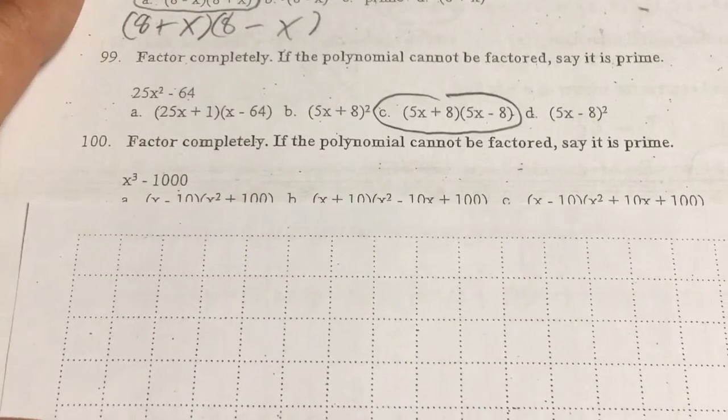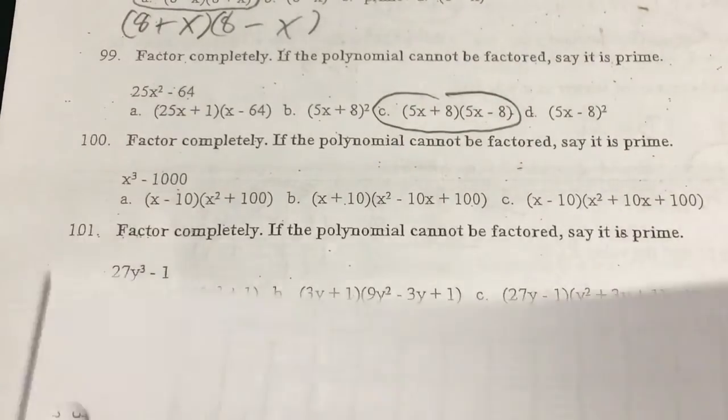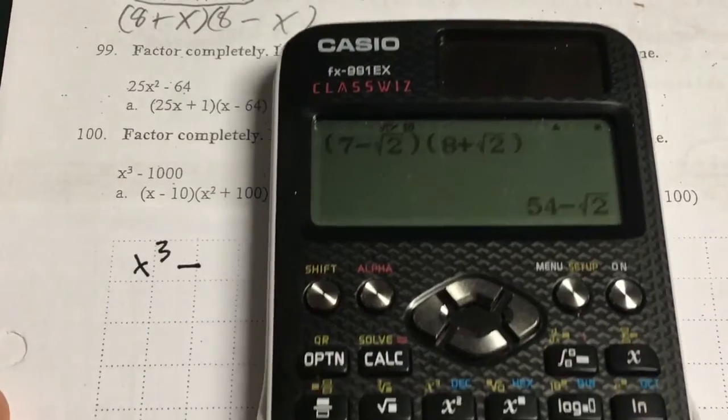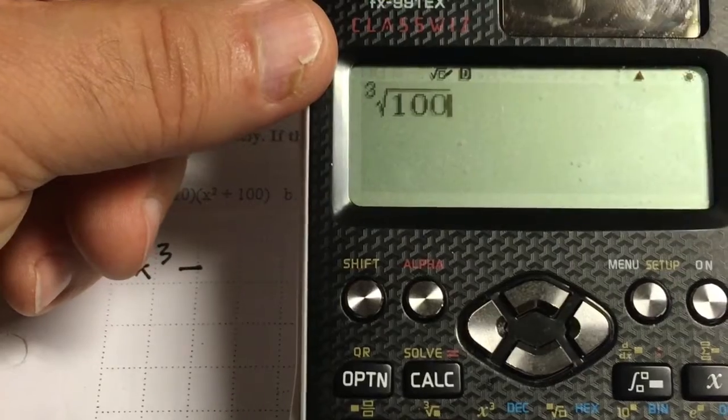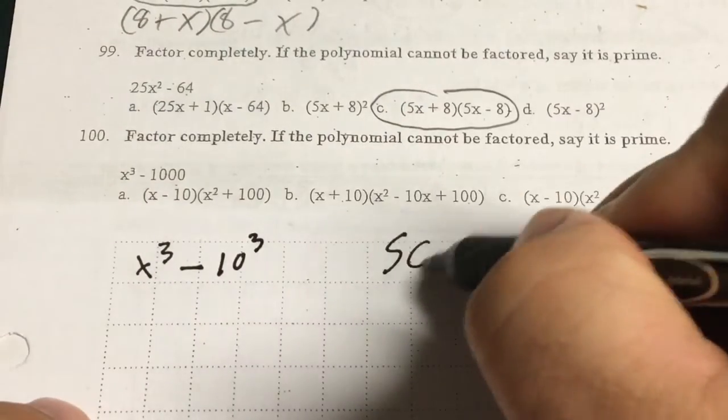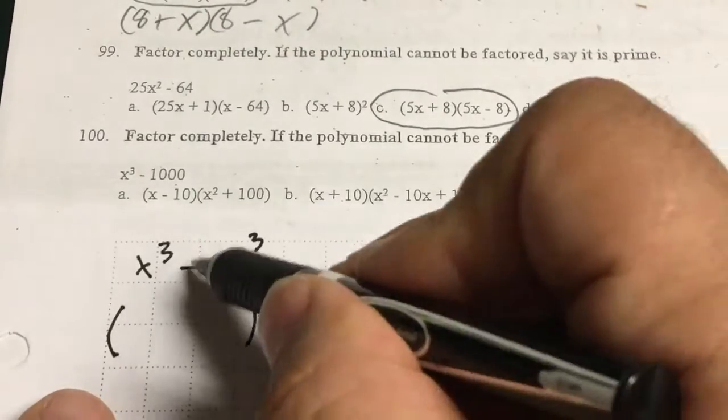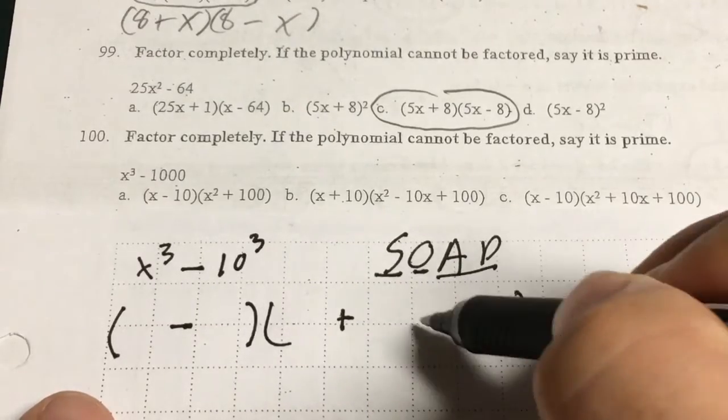Soap. Okay, I'm going to use soap for this one. 100. So I have x cubed minus, the cube root of 1000 is 10, minus 10 cubed. Now I'm going to use something called soap. I put a basic parenthesis and a larger parenthesis. Same. That's what the S stands for. So I drop that same symbol down there. O means opposite. And the AP means always positive.